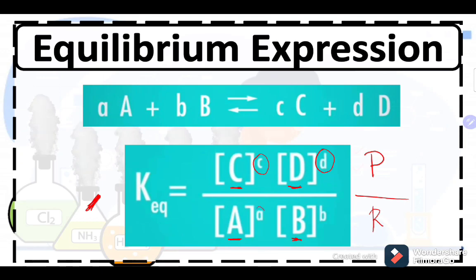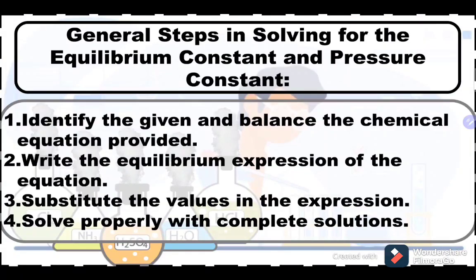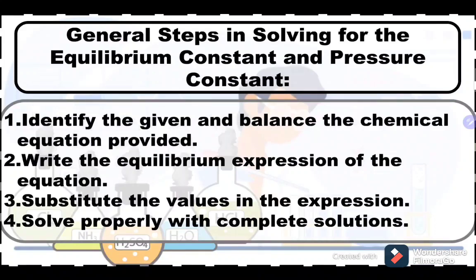That is how we derive the equilibrium expression. The general steps for solving the equilibrium constant are: first, identify the given and balance the chemical equation; second, write the equilibrium expression; third, substitute the values in the expression; and fourth, solve properly with complete solutions.